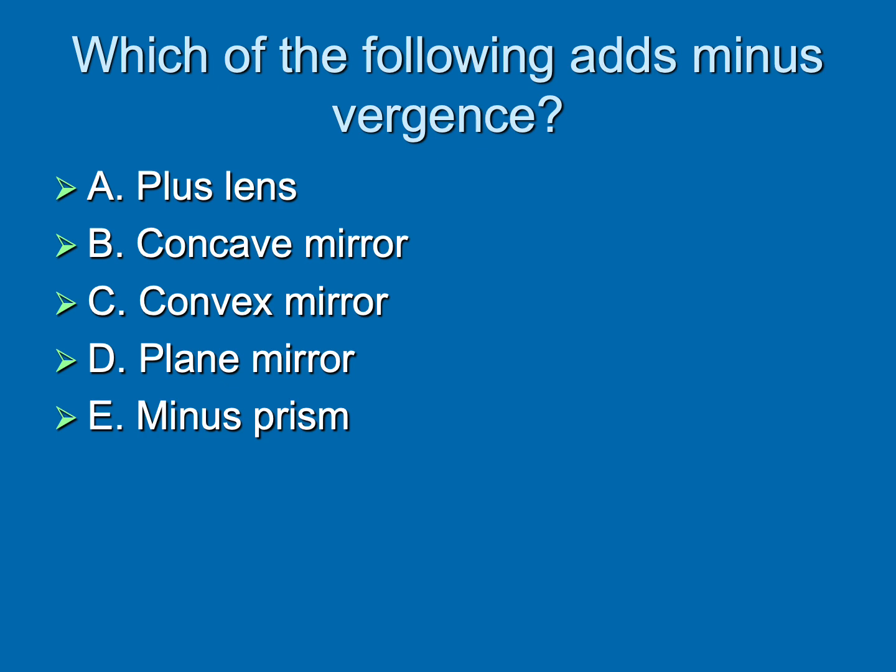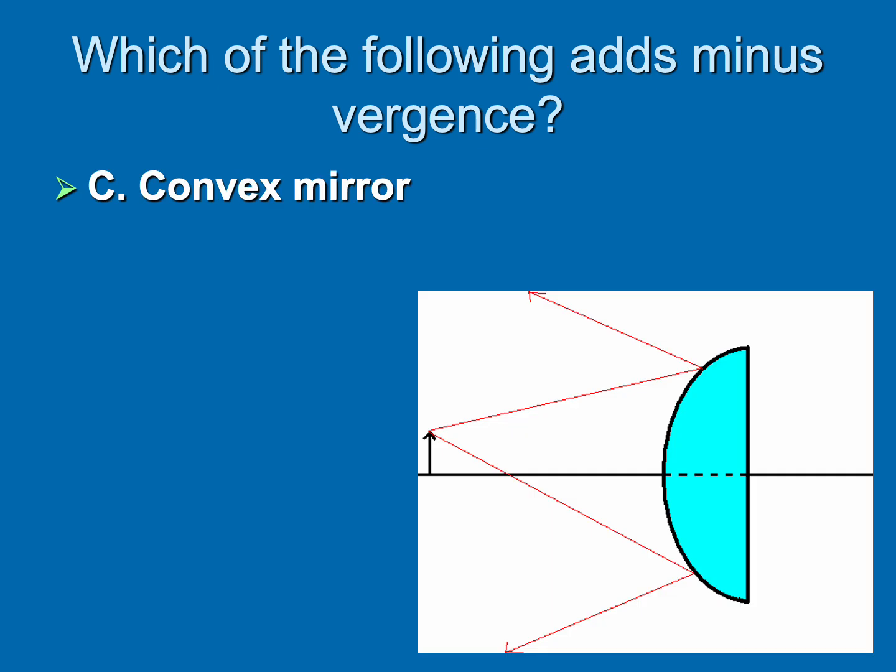Do you know which of these kinds of mirrors gives you minus vergence? Notice the way I phrase that. If you said convex mirror, you're exactly correct. We have an object on the left, the rays are diverging. And then when they hit that mirror, they reflect off in a diverging pattern. So convex mirrors diverge rays.